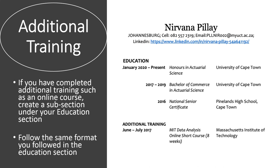You may have completed other training outside your formal curriculum — for example, an advanced Excel course at Udemy Learning Platform in 2019. You can create a subsection of education; let's call it 'additional training.' The same principles apply: years on one side, and start with the most recent.